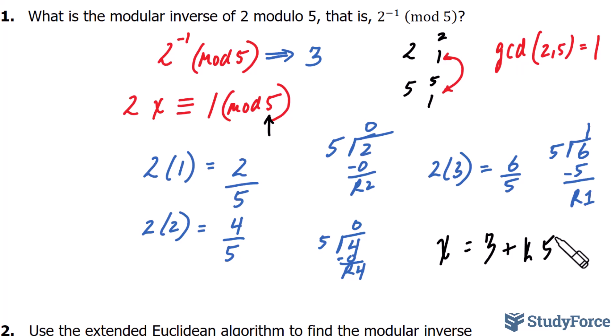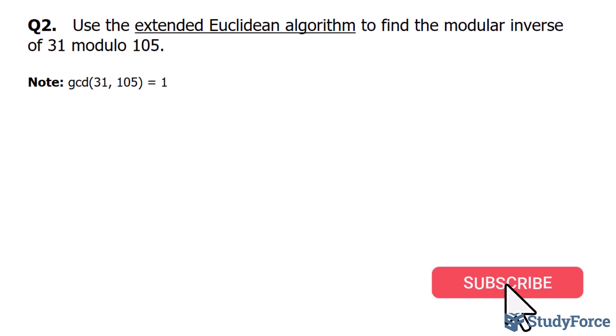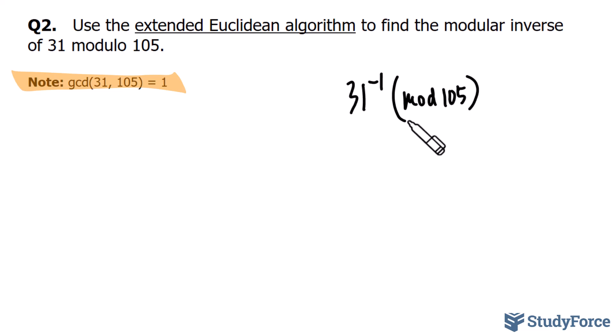Now let's try a slightly more complicated example. Question 2 asks, use the extended Euclidean algorithm to find the modular inverse of 31 mod 105. We've been given a hint. We've been told that the number 31 and 105 are co-prime. So that's one less thing that we have to verify.